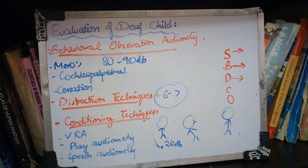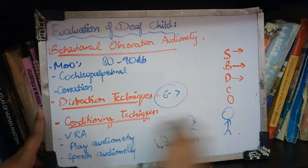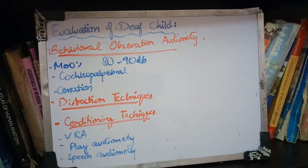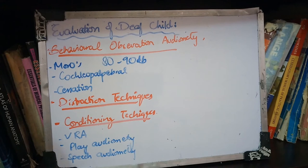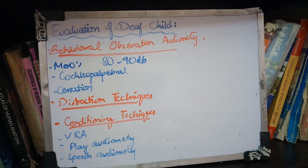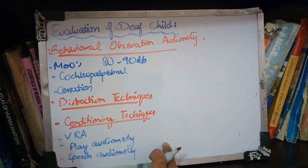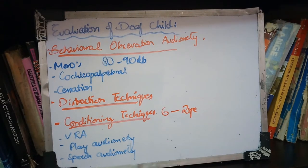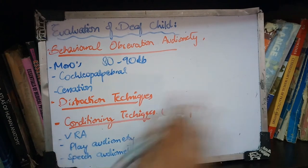After the distraction technique, there is the conditioning technique. This means you pair the stimulus with another stimulus. This is simple. First is visual reinforcement audiometry — you pair auditory stimulus with visual stimulus. You can apply this to children from 6 months onwards. For older children, you do different things. Visual reinforcement audiometry is applicable for 6 to 24 months.